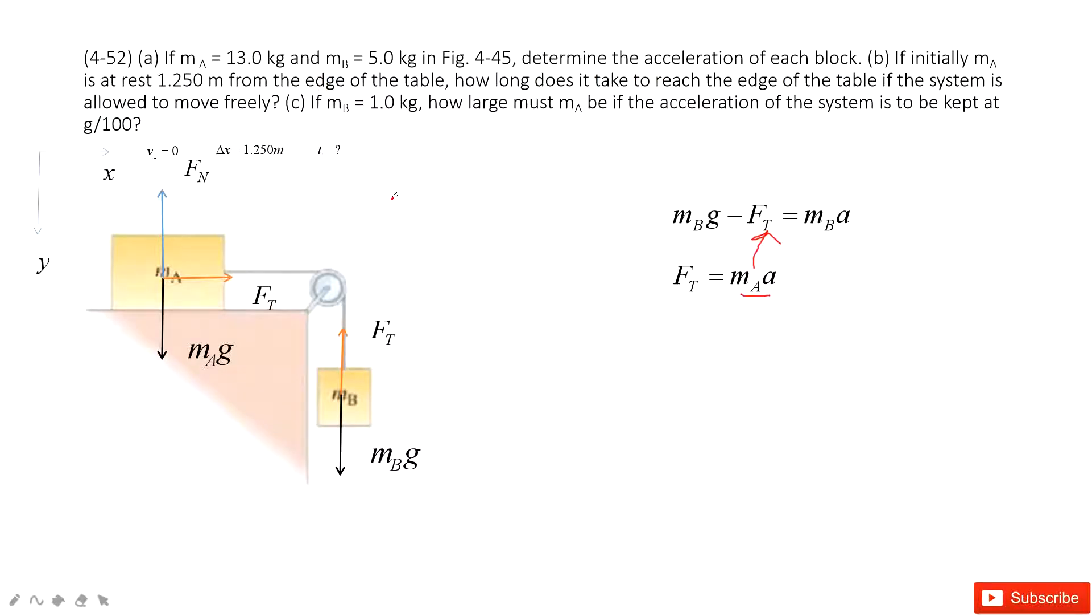The next problem tells you, we know for object A, we know its initial velocity, we know its displacement. Can you find the time? Sure, because we know the acceleration at the very beginning. After we know the acceleration, you can see initial velocity and dx. It's easy for us to get the time.